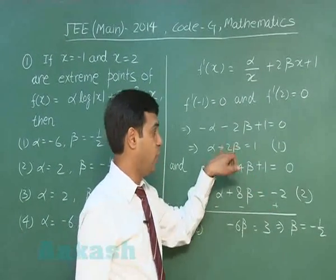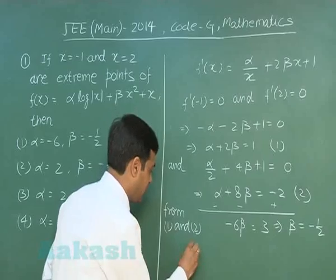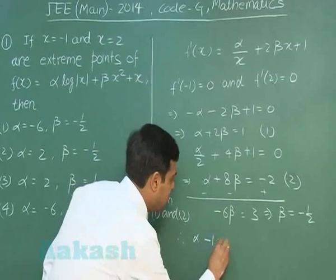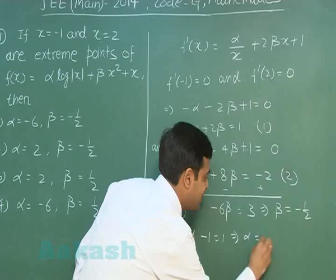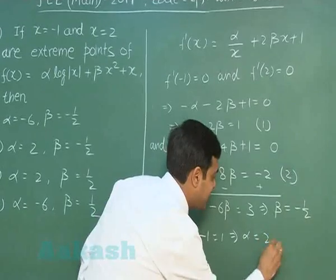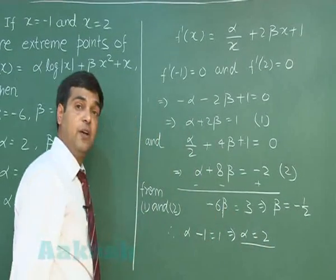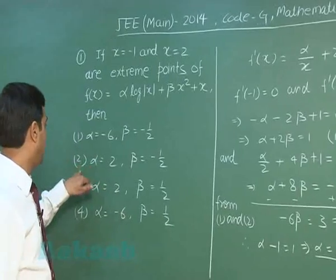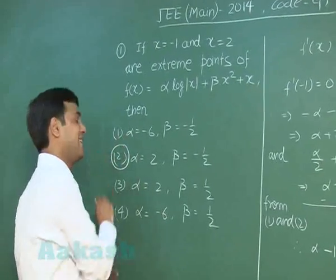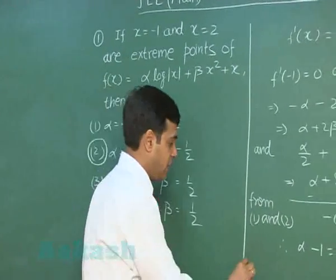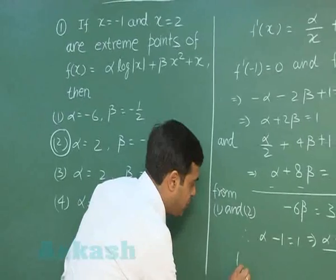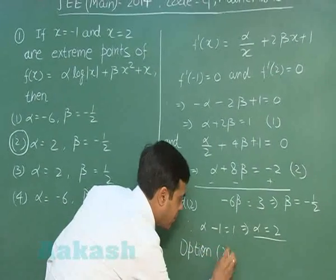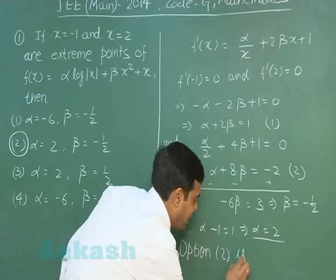Substituting beta = -1/2 back into Equation 1: alpha - 1 = 1, so alpha = 2. Selecting from the options, the answer is Option 2: alpha = 2, beta = -1/2.